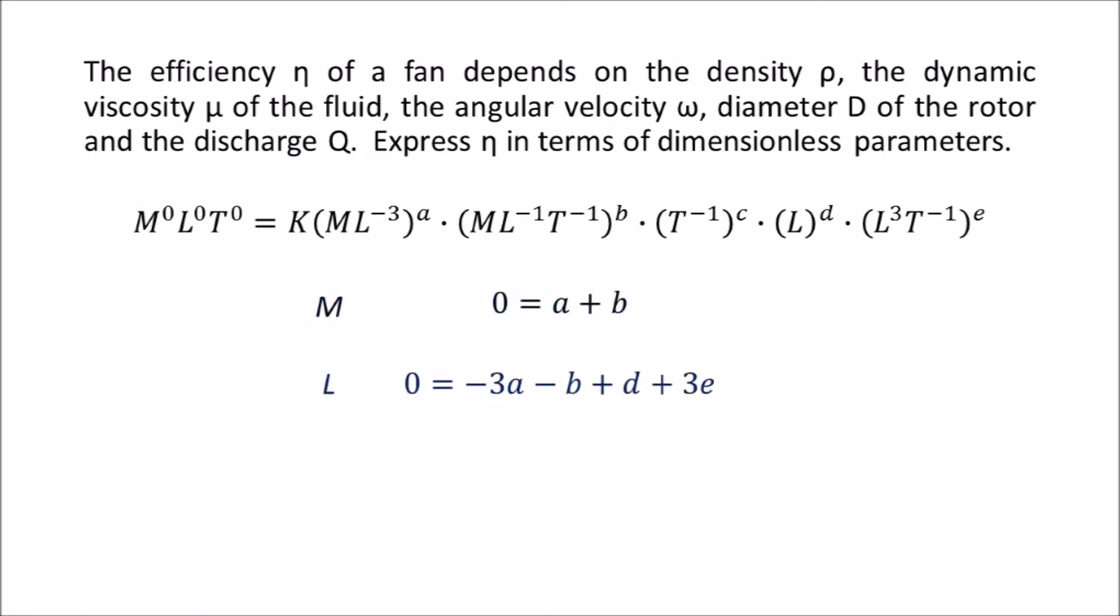For length, we again have zero on the left-hand side. From the first term on the right-hand side, we have minus 3a. We have minus b from the second term. We have d from the fourth term, and 3e from the fifth term.